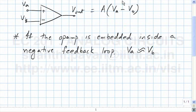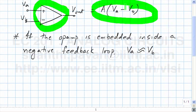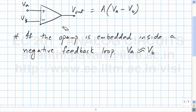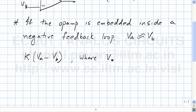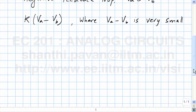The job we have at hand is to figure out what we must put inside this triangle to make it function in this fashion. The first thing to do is to find some circuit way of generating some gain K times VA minus VB, where VA minus VB is very small. So any ideas on how we might be able to do this?